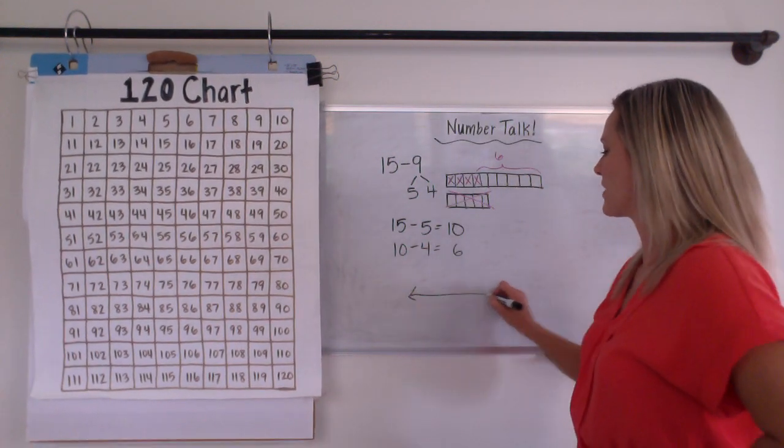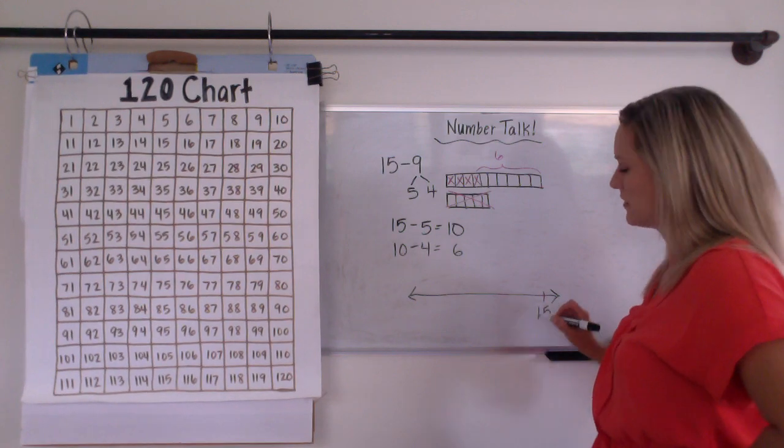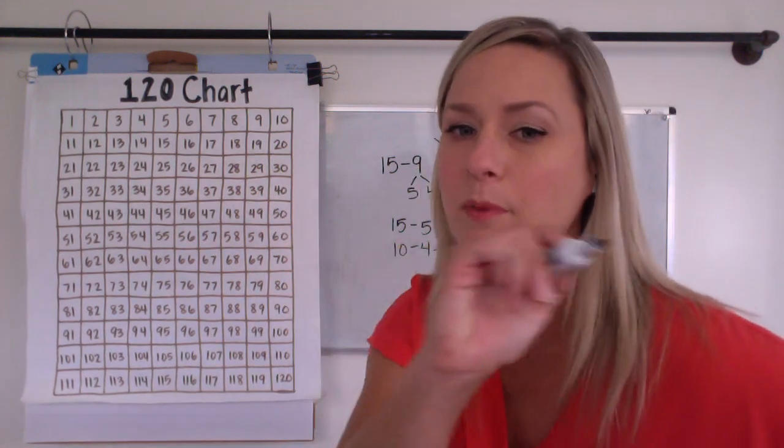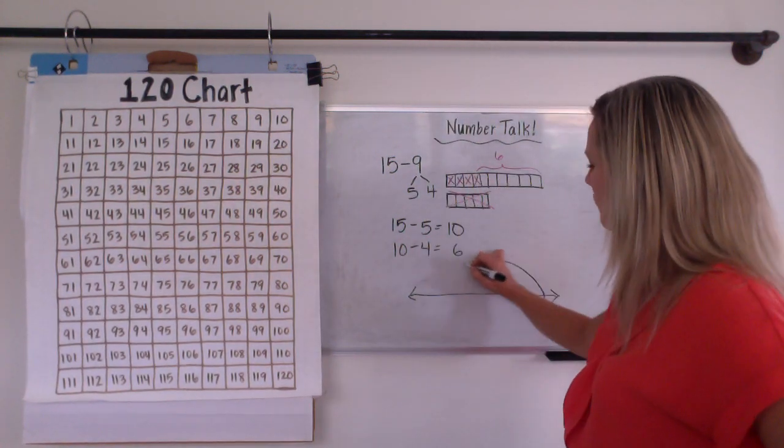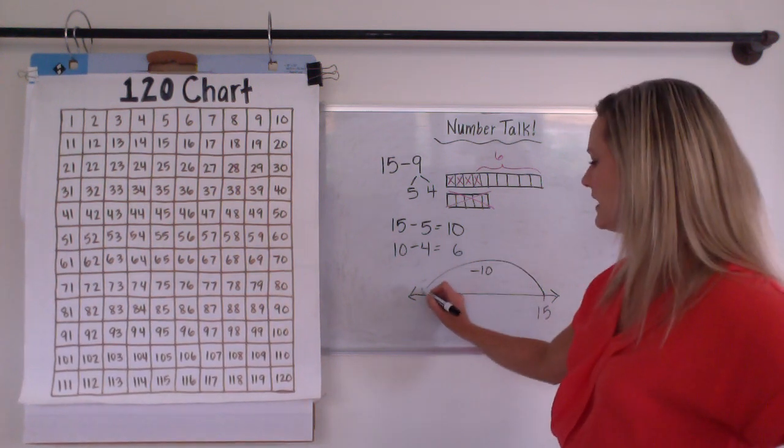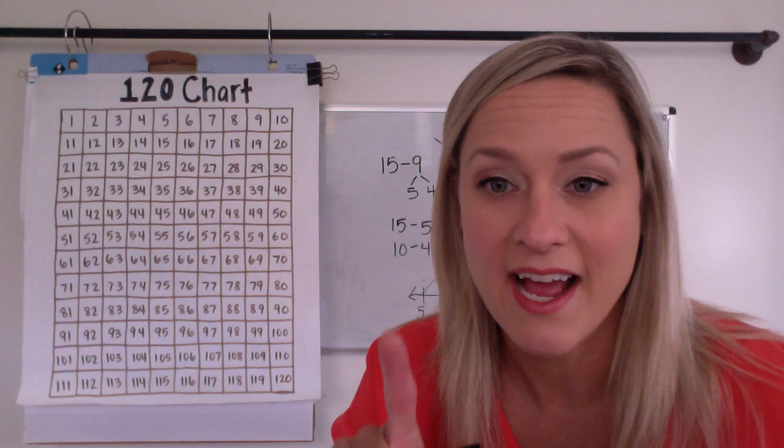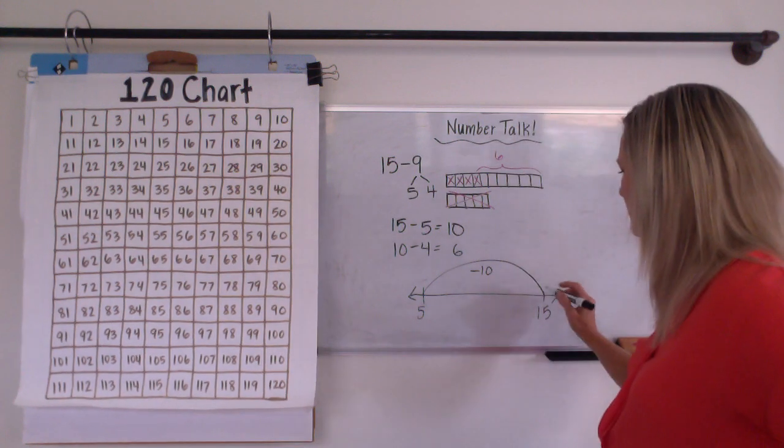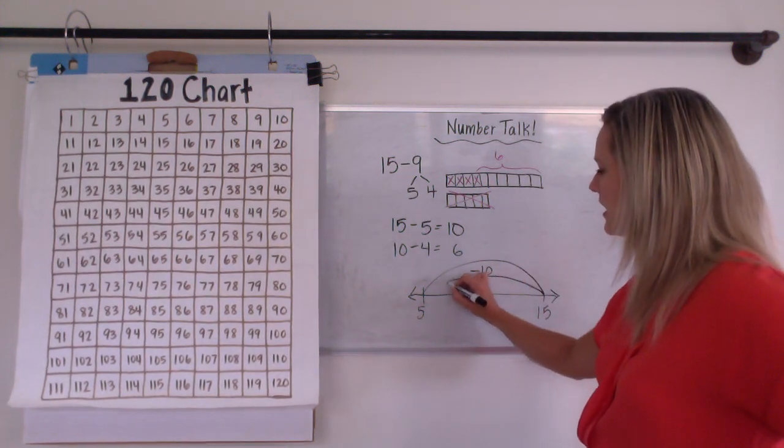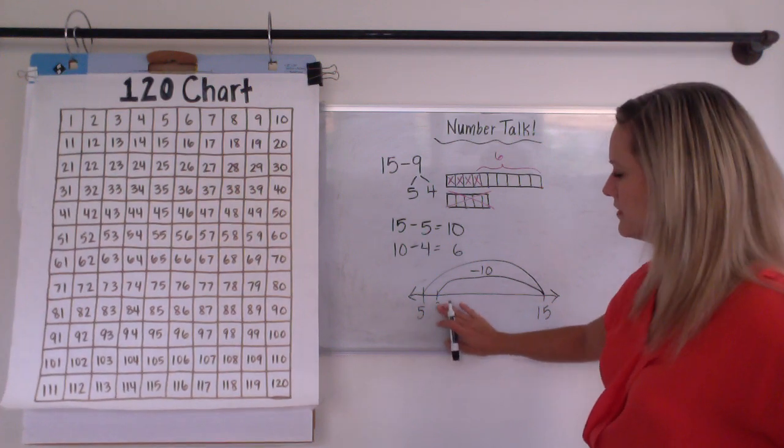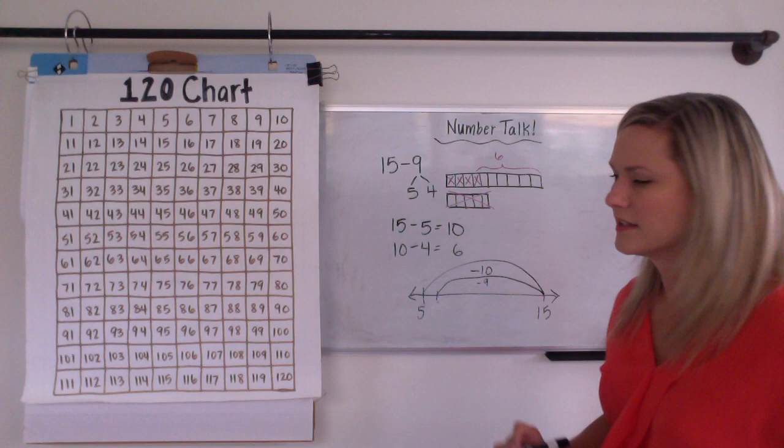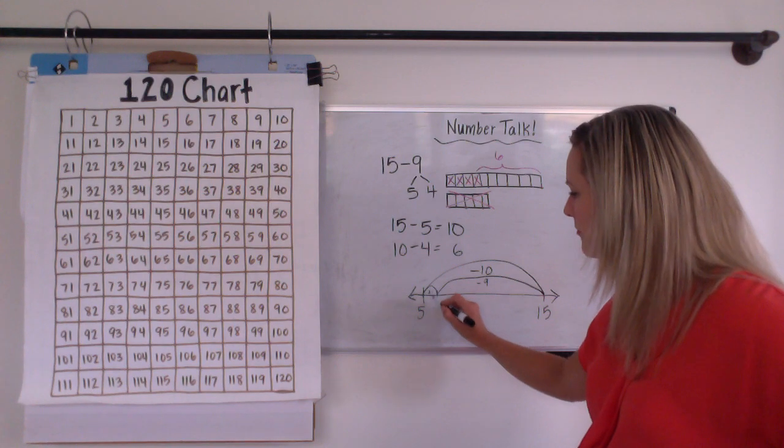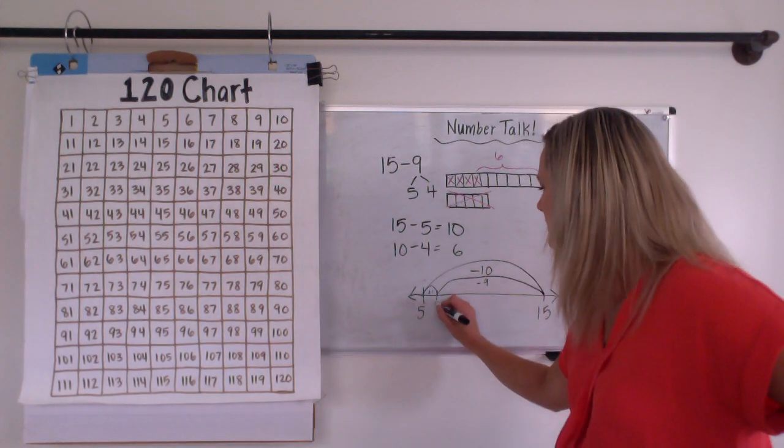All right. So maybe you thought about it on a number line as well. 15 minus 9. You could hop back, little ones. Or maybe you even said, okay, well, I know what minus 10 is. 15 minus 10 is 5. And then I didn't have to take off 10. I only had to take off how many? Tell me. Nine. Okay. So maybe you're like, well, I could just take off 9. Oops. I'm not in the wrong spot. I'm taking off 9 up here. So then I would just have to add the 1 back on. And that would make 6.